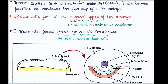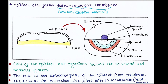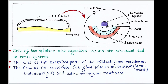The epiblast also forms extra-embryonic membranes — that is, amnion, chorion, and allantois. Cells of the epiblast are organized around the notochord and nervous system. The cells at the anterior part of the epiblast form ectoderm, and the cells at the posterior part give rise to mesoderm such as heart and muscle, as well as endoderm — that is, gut — and extra-embryonic membrane.